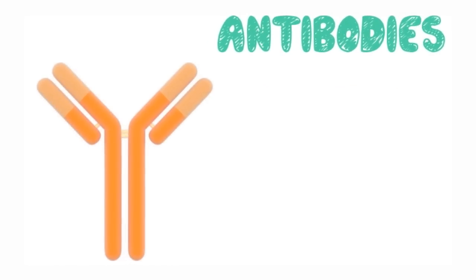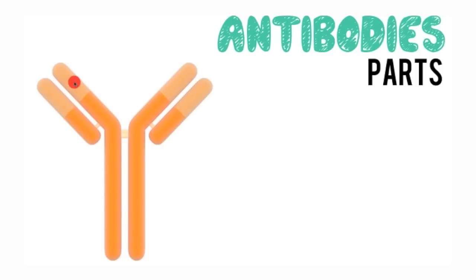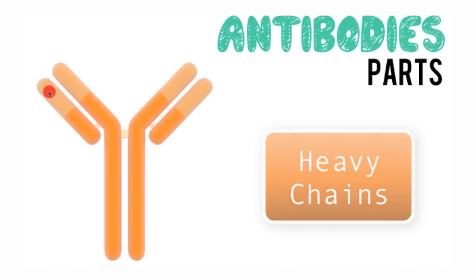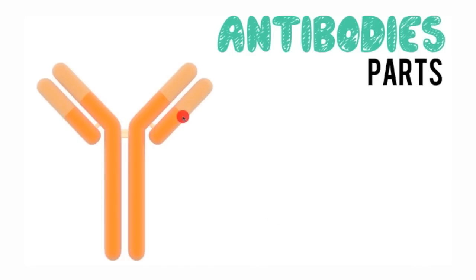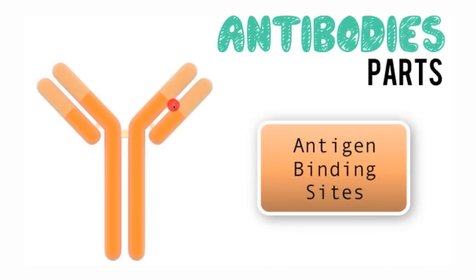Before we go further, I want to talk about the parts of antibodies. Using the simplified model: on the left and right sides, you see two long chains known as the heavy chains. On the left and right sides you also have two light chains — they're smaller and called light chains. On the tips, you notice lighter yellow structures on both the heavy and light chains — these are known as the antigen binding sites.